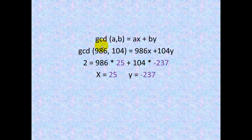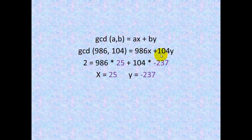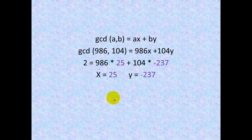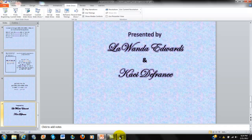This proves the theorem that GCD(A,B) equals Ax plus By. Specifically, GCD(986, 104) equals 986x plus 104y, and we have 2 equals 986 times 25 plus 104 times negative 237. Our x and y values are x equals 25 and y equals negative 237.